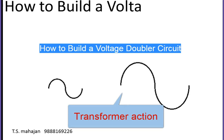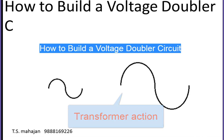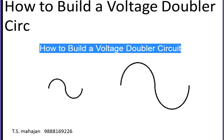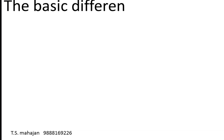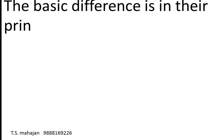A transformer can be used as a voltage step-up device, but in the case of a transformer, the input is AC and the output will also be AC. Moreover, the transformer is based on the principle of electromagnetic induction. Our next question is: what is the difference between a transformer and a voltage multiplier circuit, which uses diodes and capacitors?